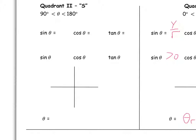Now we're looking at quadrant 2. The terminal arm starts at the initial arm and terminates in quadrant 2. Here's theta. Things are different in quadrant 2 because X is negative and Y is positive — X is negative because we went out to the left, and Y is positive because we went up. For example, a quadrant 2 point might be (-3, 7): go left 3 and up 7. The angle inside the reference triangle is the reference angle, and that reference triangle helps us do our SOHCAHTOA.